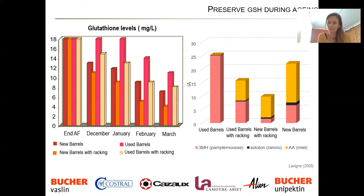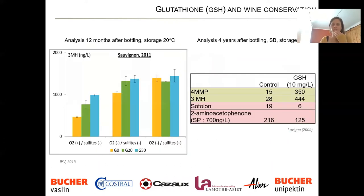This directly translates into the aroma analysis. In pink we have the 3MH thiol — a grapefruit flavor representing the freshness of the wine. In black we have sotolon, the molecule associated with rancid aromas. In yellow, aromas of honey and waxy characters — premature aging aromas. With a used barrel on lees we don't produce much of these premature aging aromas and we maintain freshness. As soon as we rack, we lose a lot of thiolic compounds and start producing more oxidized and premature aging aromas.